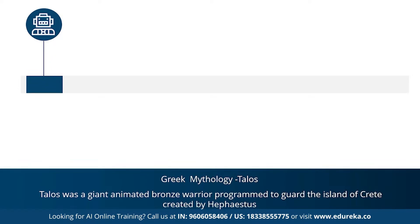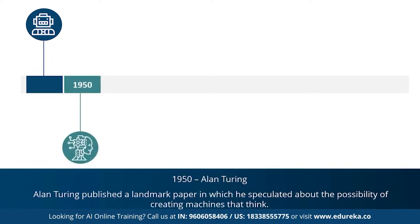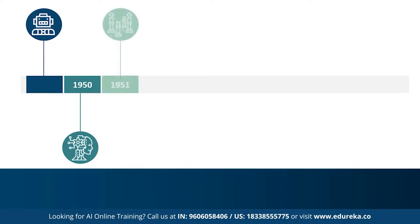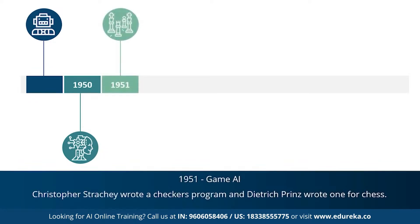In 1950, Alan Turing proposed the Turing test, which determines whether or not a computer can intelligently think like a human being. The Turing test was the first serious proposal in the philosophy of artificial intelligence. 1951 marked the era of game AI, when computer scientists developed programs for checkers and chess.